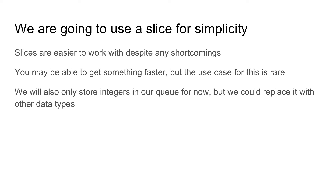We're going to store integers in our queue for now. You can replace this with other data types and use things like interfaces to make it more generic. But because Go does not have generics, you can't write one queue implementation in Go that works for every data type, at least not as well as it would with generics.